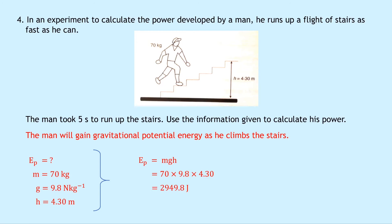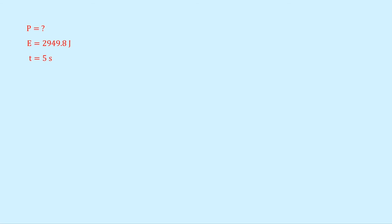Notice we haven't answered the question yet because they asked for power, not gravitational potential energy. Now that we know an energy value, we can use the relationship between power, energy and time. We're trying to find power, the energy is 2,949.8 joules — deliberately not rounded for accuracy — and the time is 5 seconds. Using P equals E over t, we get 2,949.8 divided by 5, which gives 590 watts.